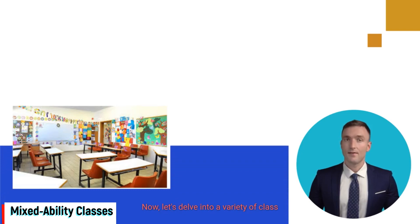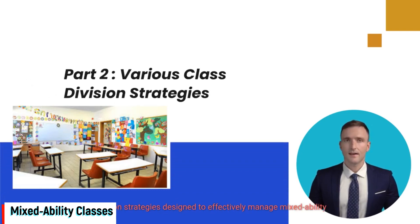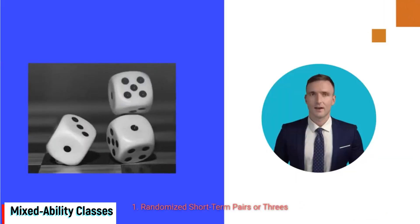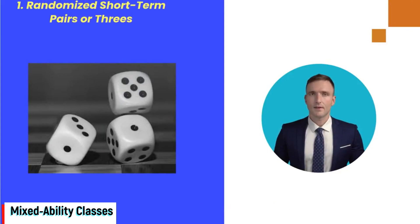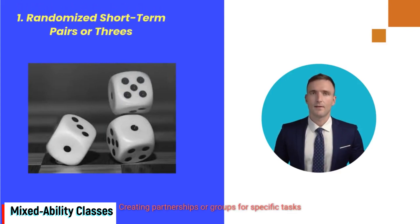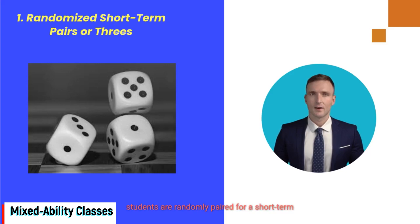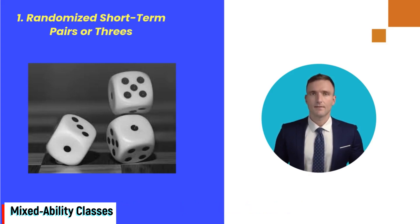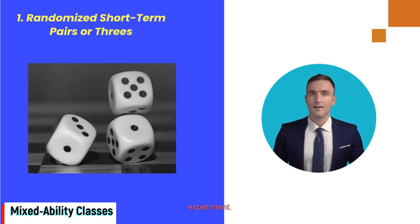Let's delve into a variety of class division strategies designed to effectively manage mixed ability classes. The first is randomized short-term pairs or threes — creating partnerships or groups for specific tasks to encourage peer support and collaboration. For instance, in a science class, students are randomly paired for a short-term experiment, pairing one student versed in the scientific method with another who may need extra support, fostering collaboration and exchange of ideas.